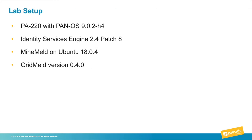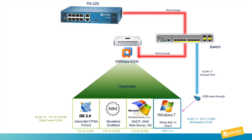For this lab demo, here is the setup. I have a PA-220 running PAN-OS 9.0.2-H4. I'm running Identity Services Engine 2.4 patch 8. MineMeld is running on Ubuntu 18.04, and the GridMeld version is 0.4.0. There are four virtual machines installed on my hypervisor. Three belong to the data center VLAN — VLAN 10, subnet 172.16.10.0/24 — and one workstation is in VLAN 11 at 10.0.11.0. The three servers in the data center comprise ISE 2.4, MineMeld running the GridMeld application, and a Microsoft Active Directory domain controller running DHCP, DNS, and acting as a web server.